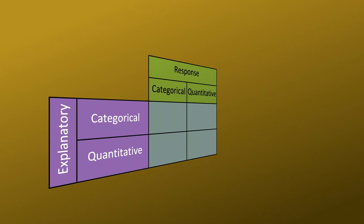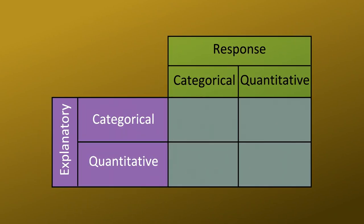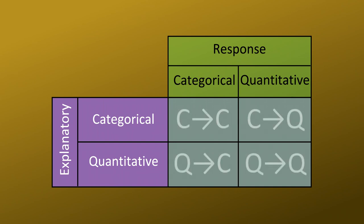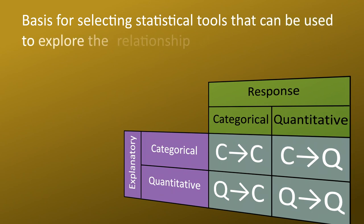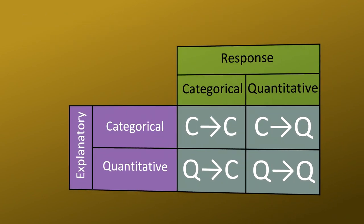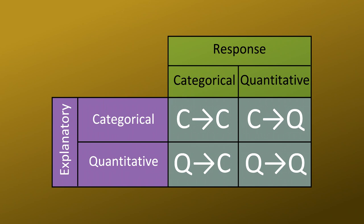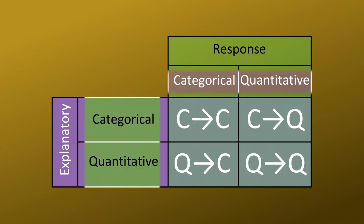Even though we won't be able to be certain that the association we're testing is causal, for the purposes of exploring our question, it remains important to determine the role that each variable will play in our model. This role-type classification can be summarized and easily visualized in a table, and serves as the structure for the rest of this course. Not only does it help you construct graphs, but it's also the basis for selecting statistical tools to explore relationships, depending on whether each variable is response or explanatory, and whether categorical or quantitative.